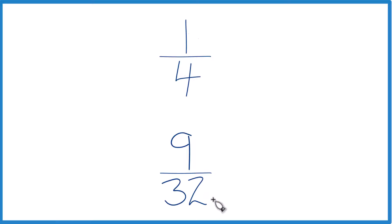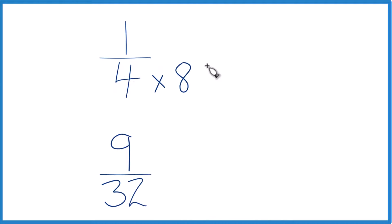I know that 4 goes into 32 8 times, so I'm going to multiply 4 times 8, and that equals 32. Down here I already have 32, so I'm just going to keep this as 9 30 seconds.